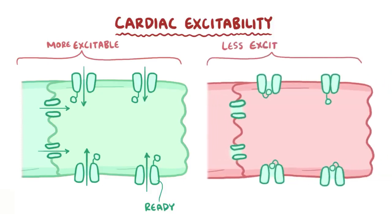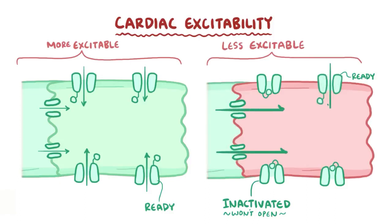On the other hand, a less excitable cell might have most of its sodium ion channels inactivated, meaning they won't open in response to stimuli, and this is represented by this little ball being stuck in the opening. Maybe only a few of them are actually ready, and so this cell would need a strong current of ions to flow in before it depolarized.